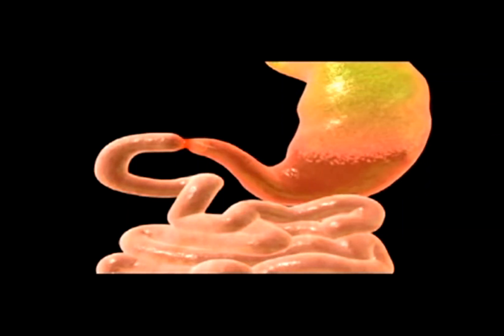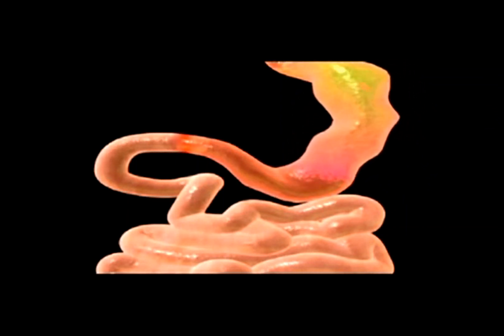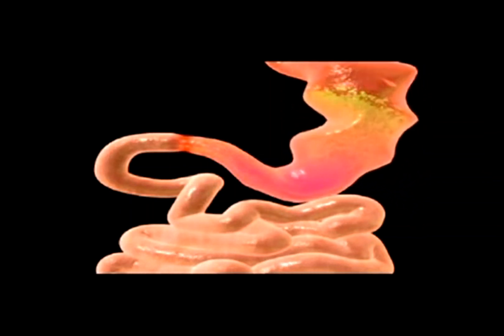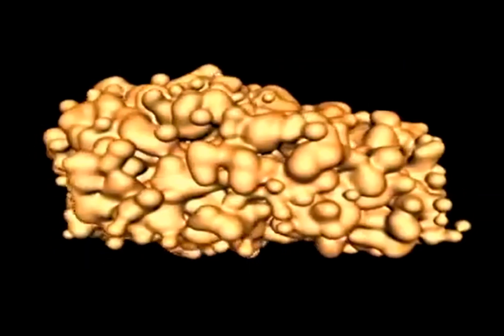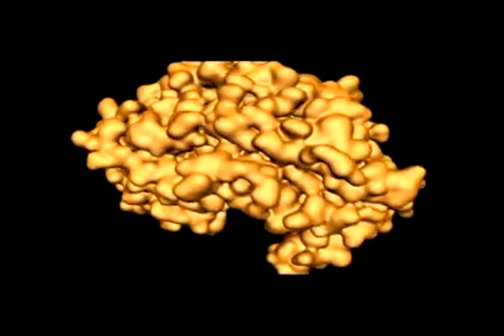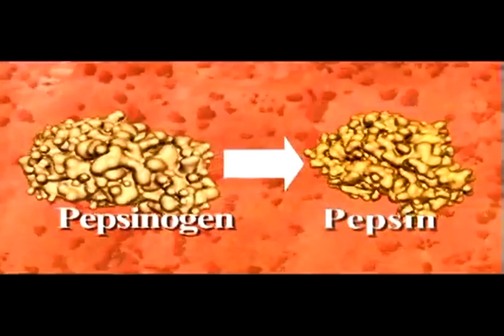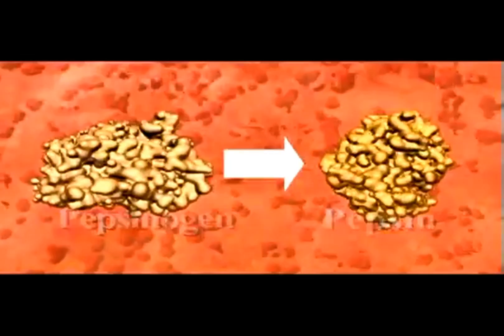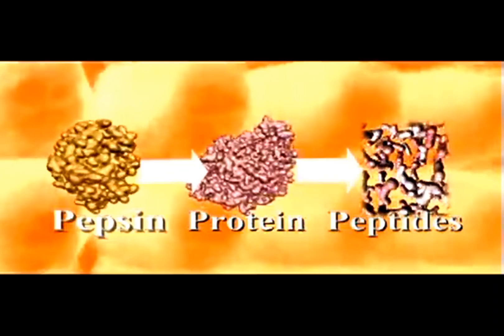The chemical breakdown of food is initiated by the hormone gastrin, which stimulates the secretion of hydrochloric acid and pepsinogen from glands lining the walls of the stomach. Pepsinogen is an inactive form of the protein-digesting enzyme pepsin. Pepsin must be secreted in the inactive pepsinogen form in order to prevent it from digesting the cells that produce it. It is the highly acidic conditions in the stomach, created by the release of hydrochloric acid, that converts pepsinogen into pepsin. Once activated, pepsin breaks proteins down into shorter amino acid chains called peptides.